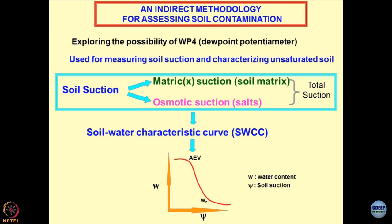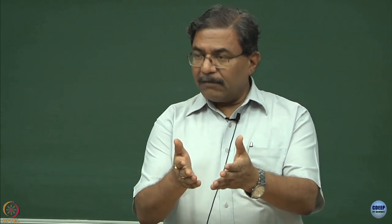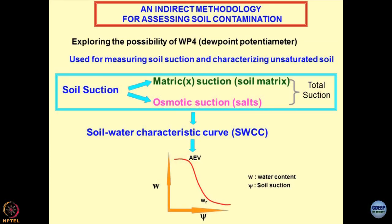If I know the SWCC curve, I can speculate all other properties using AI-based speculative modeling. For precise irrigation, SWCC can be linked with an actuator: the moment moisture drops below the residual moisture content WR (the wilting point), suction values become extremely high. I can measure suction in situ using sensors and trigger the irrigation system automatically. Similarly, for nuclear waste disposal, if the inherent heat tends to crack the geo-material, I may need to maintain artificial saturation of the system.